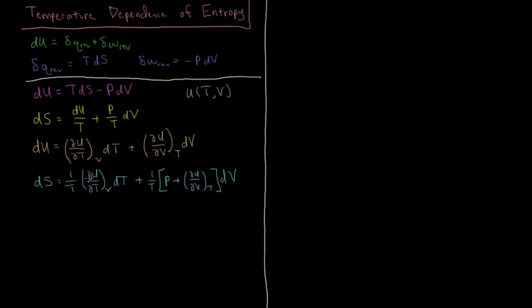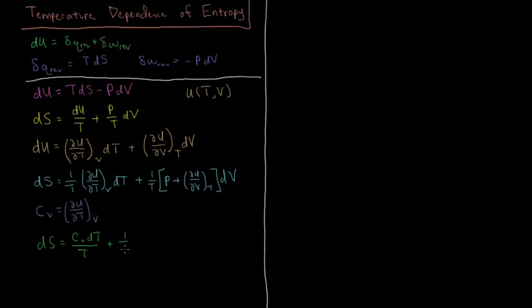The partial derivative of internal energy with respect to temperature at constant volume is the constant-volume heat capacity, C_V, defined as (∂U/∂T)_V. Substituting that in, we have: dS = C_V dT/T + (1/T)[p + (∂U/∂V)_T] dV.